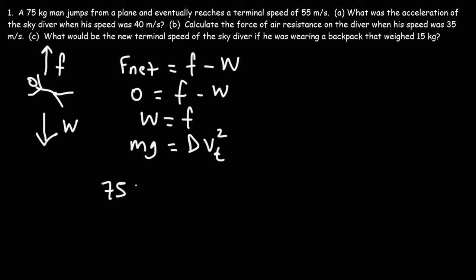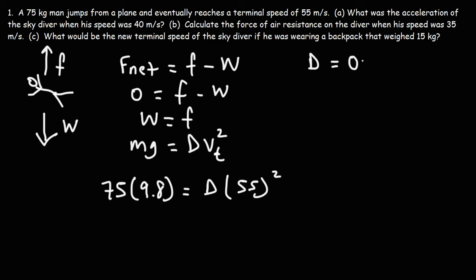What we want to do first is determine the value of the proportionality constant D. We have a mass of 75 kilograms, gravitational acceleration of 9.8, and terminal speed of 55 meters per second. So D equals 75 times 9.8 divided by 55 squared, which gives D equal to 0.24298.